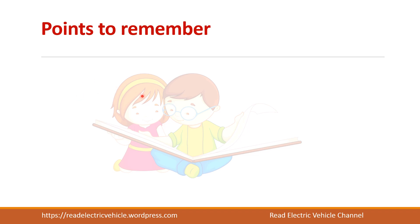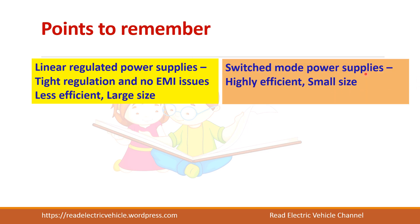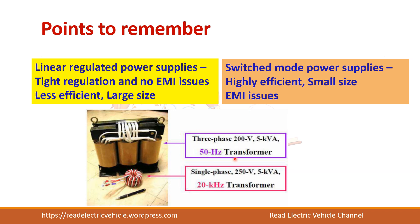The points to remember are: linear regulated power supplies have tight voltage regulation and no EMI issues but they are less efficient and of larger size. SMPS units are highly efficient and small in size but they have EMI issues. You can see the size comparison — this is a 50 hertz transformer and the corresponding high frequency transformer is much smaller. Depending upon your requirement you can choose a linear regulated power supply or SMPS, but normally nowadays most equipments use SMPS.